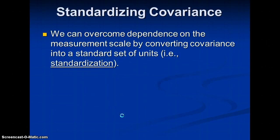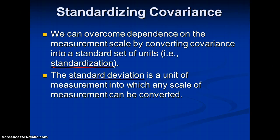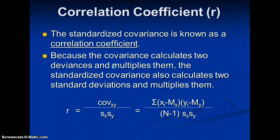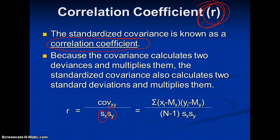We can overcome that dependence on the measurement scale by converting covariance into a standard set of units — i.e., standardization. The standard deviation is a unit of measurement into which any scale can be converted; all we do is divide any distance from the mean by the standard deviation. The standardized covariance is known as a correlation coefficient. Because the covariance multiplies two deviances, the standardized covariance multiplies two standard deviations — one for variable X and one for variable Y.